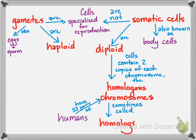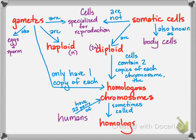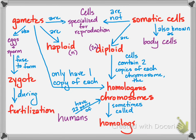Gametes are haploid cells — they only have one copy of each chromosome. We call that the haploid number N, so diploid becomes 2N because it has twice as many chromosomes. Gametes can have one copy of each of the autosomes — that's chromosomes 1 through 22 — and one sex chromosome. In humans, that's a total of 23 chromosomes in a haploid cell and 46 in a diploid cell. Gametes are formed by meiosis in a process called gametogenesis. The diploid cell that egg and sperm form is called a zygote, and fertilization is the process of an egg and sperm cell fusing. That zygote is diploid — so you've got haploid gametes, a diploid zygote, and a diploid adult.